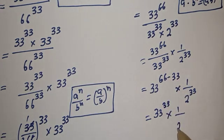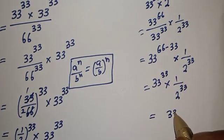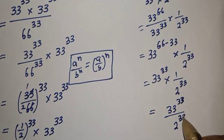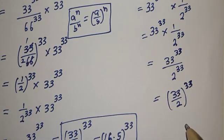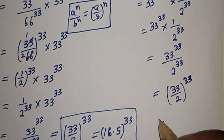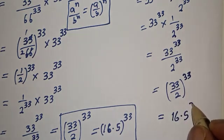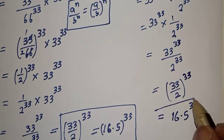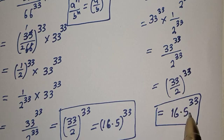Over 2 raised to power 33. Now if you multiply this by one, we have 33 raised to power 33 over 2 raised to power 33. This is equal to 33 over 2 to the power of 33. This is equal to 33 divided by 2, that is 16.5 raised to power 33. This is the final answer. You can see that using the first method we got 16.5 raised to power 33, and with the second method we also get the same answer, 16.5 raised to power 33.